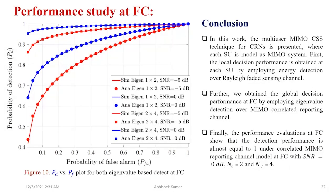The ROC plot at the FC shows that with an antenna configuration of 2×4 (NFC = 4), optimum performance is achieved even at very low probability of false alarm. In conclusion, this work presents multi-user MIMO cooperative spectrum sensing for cognitive radio networks where each SU is modeled as a MIMO system. Local decision performance at each SU uses energy detection over a Rayleigh fading sensing channel. Global decision performance at the FC employs eigenvalue-based detection over a correlated MIMO reporting channel with Rician fading. Detection performance at FC achieves near unity at 0 dB SNR with Nt = 2 and NFC = 4.